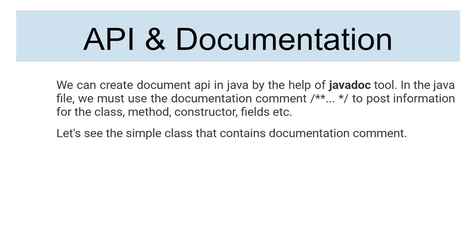Some companies will definitely find this helpful. So let's understand — for example, I have created one project and I want to generate Java documentation for it. In the Java file you must use the documentation comment. You may have used this comment above classes, writing what the class does. Above methods also we can write comments regarding what the method does. For classes, methods, constructors, and fields you can use it.